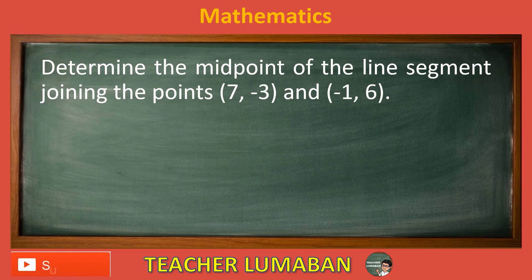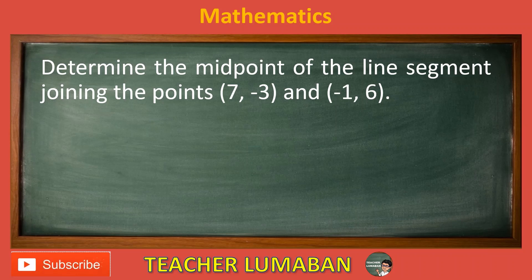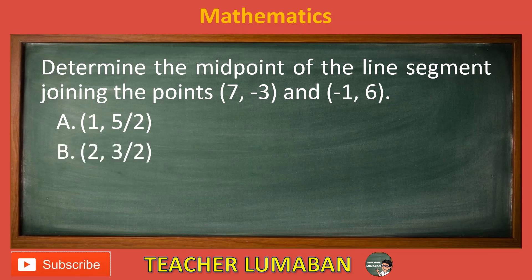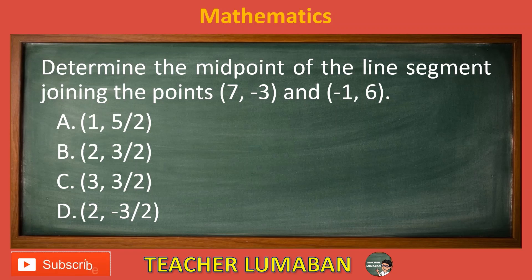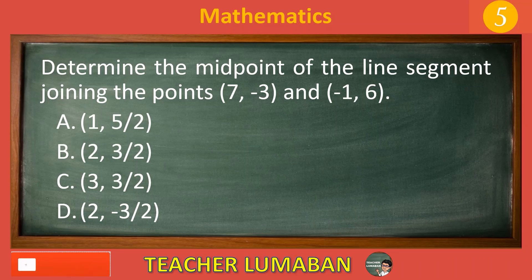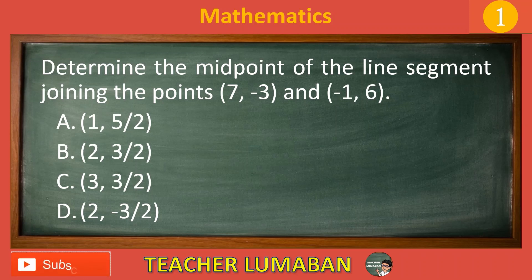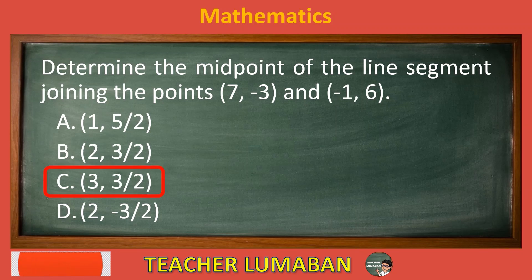Determine the midpoint of the line segment joining the points (7, -3) and (-1, 6). Letter A: (1, 5/2). Letter B: (2, 3/2). Letter C: (3, 3/2). Letter D: (2, -3/2). Choose the suitable answer based on the given choices in 5 seconds. The correct answer is Letter C: (3, 3/2).